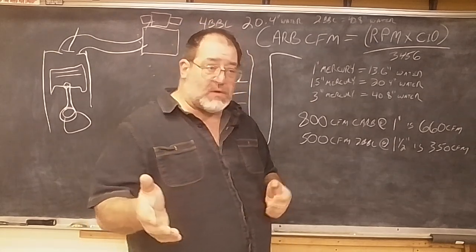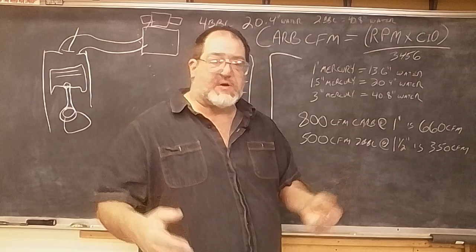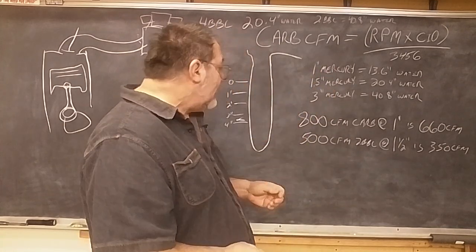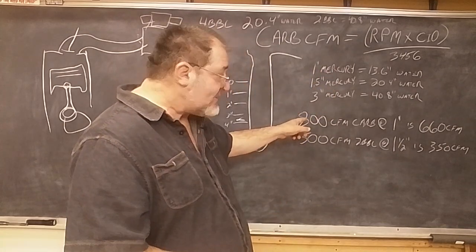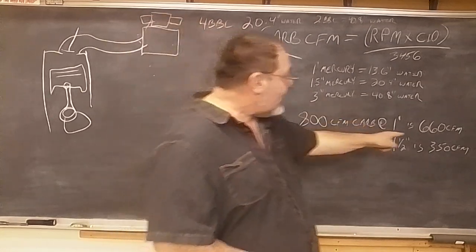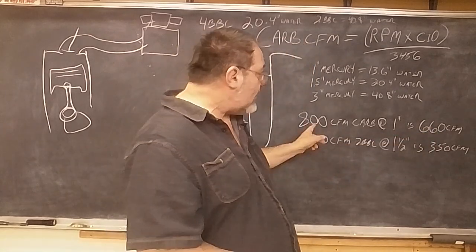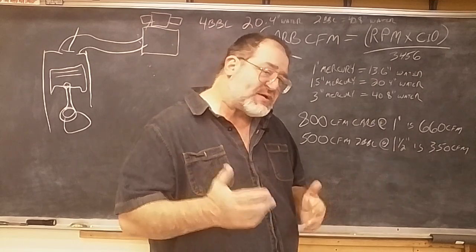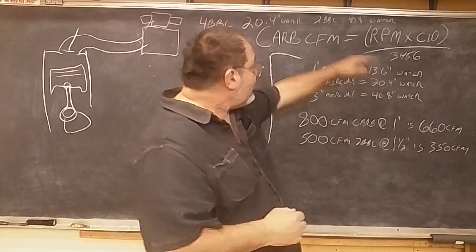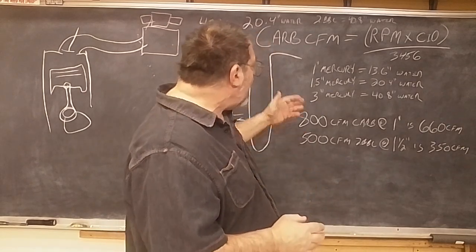Some guys will look at a dyno when it's running and say they dropped down to one inch of vacuum - that's inches of mercury. An 800 CFM carb, like I just said, if it's at one inch instead of an inch and a half like it's tested, its flow drops down to 660 CFM. So your 800 carb is actually very flexible as to how much CFM it can move depending on what the pressure drop across that carburetor is. That's why this formula really doesn't work.